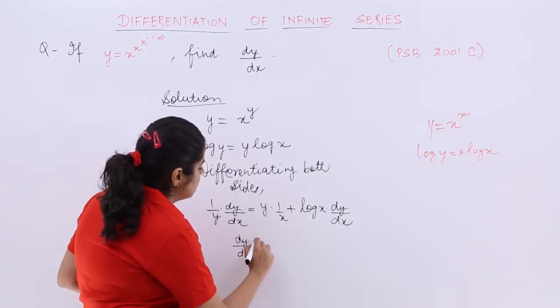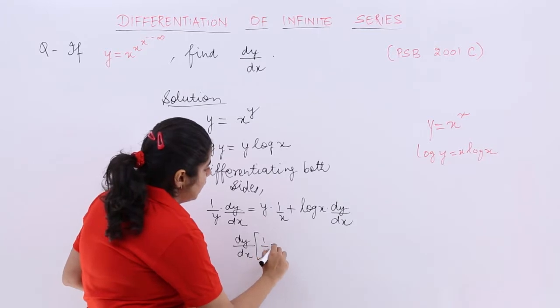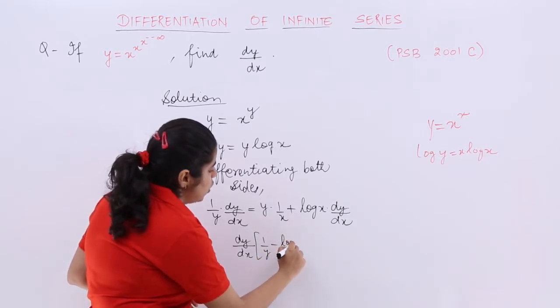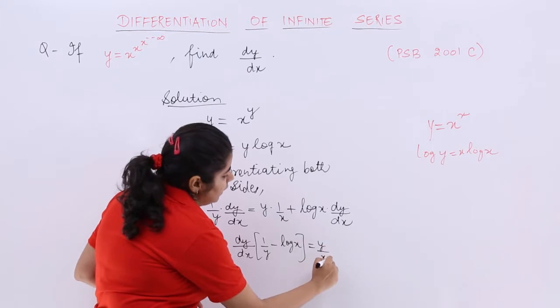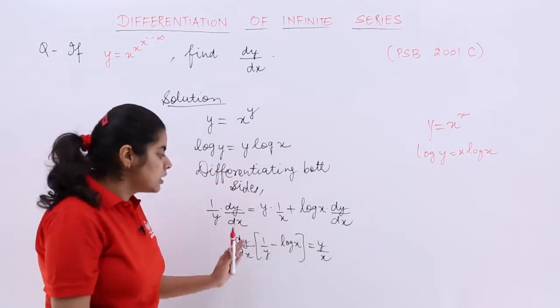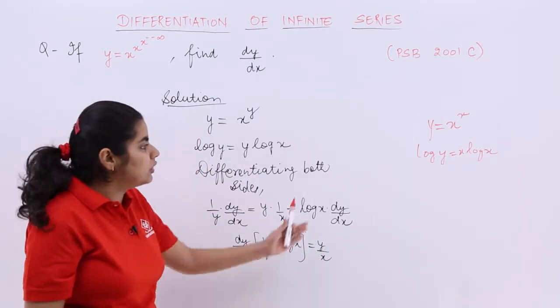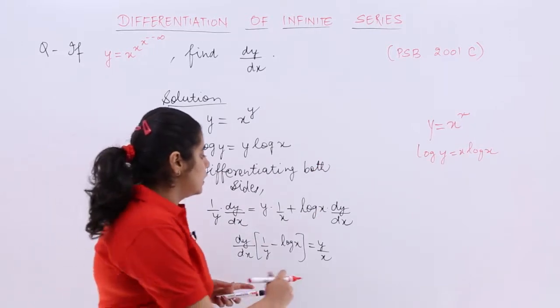dy by dx times 1 by y minus log x is equal to y upon x. This is how we solve it. Now it's very easy. Nothing has to be done. You have to just simply solve it. So let's write it here.